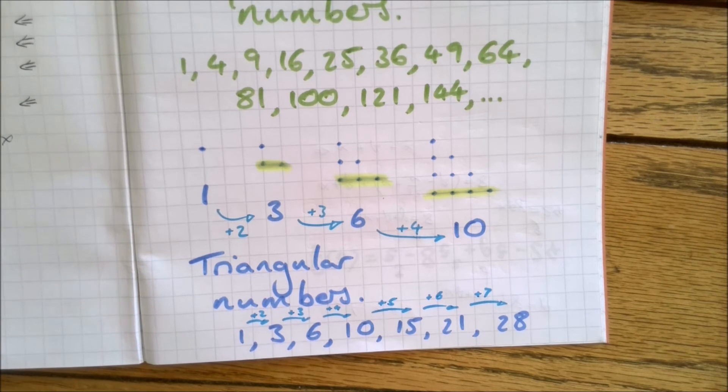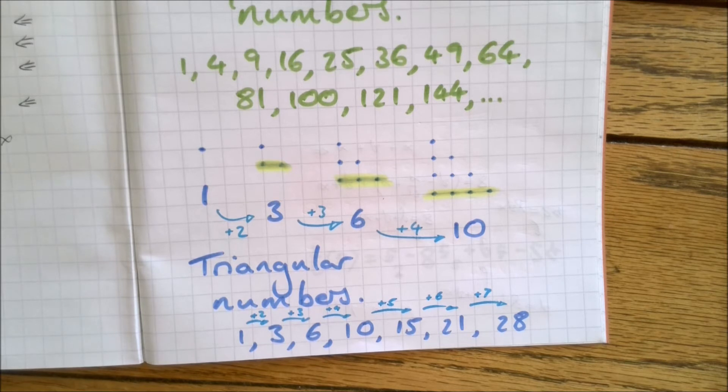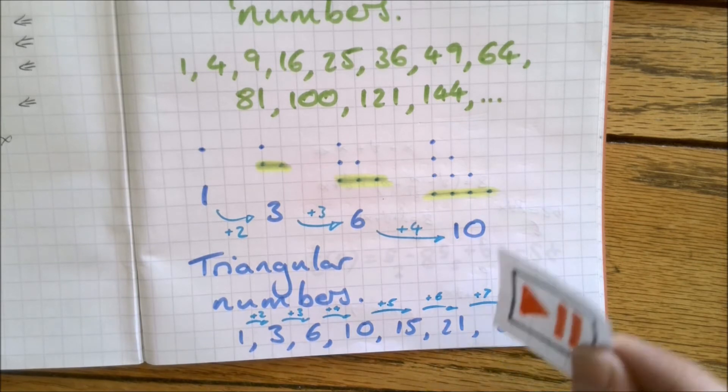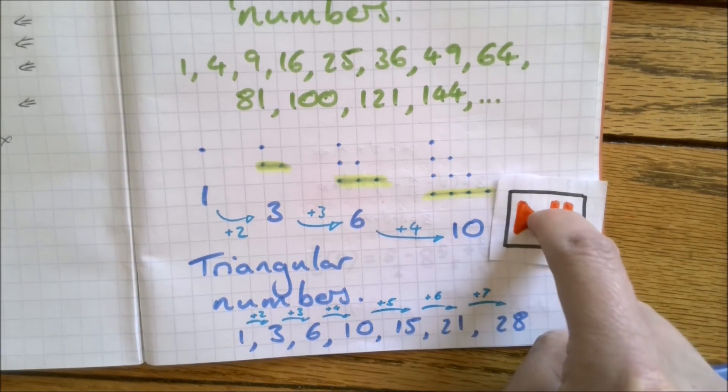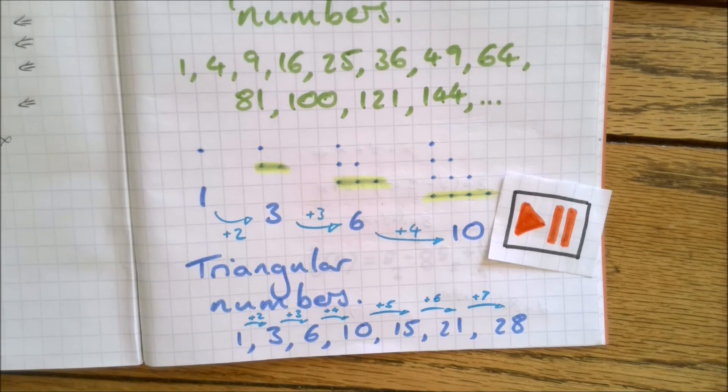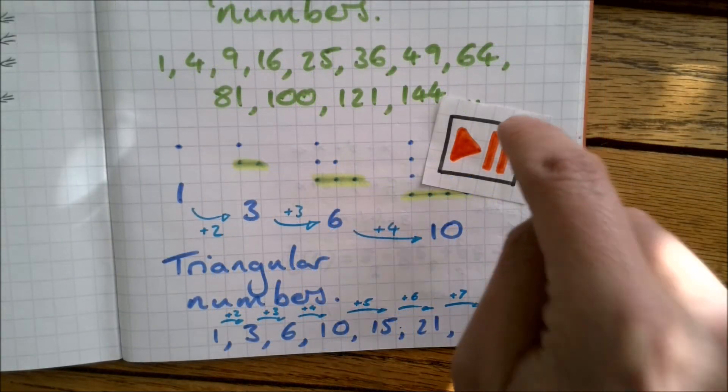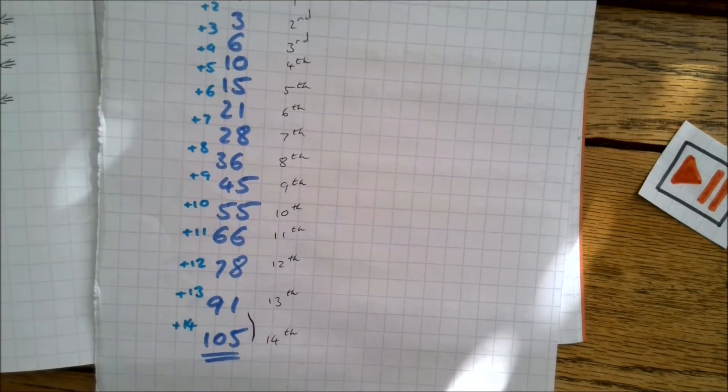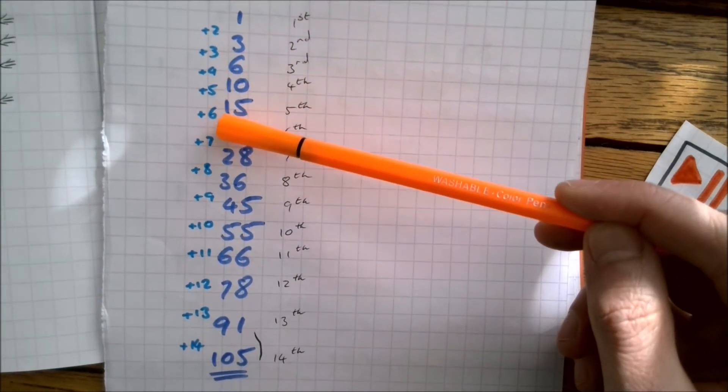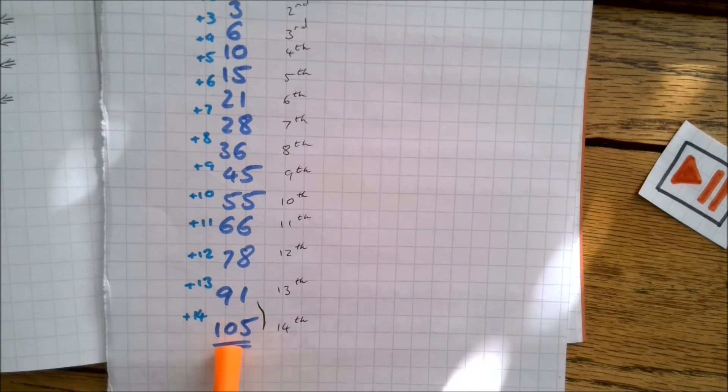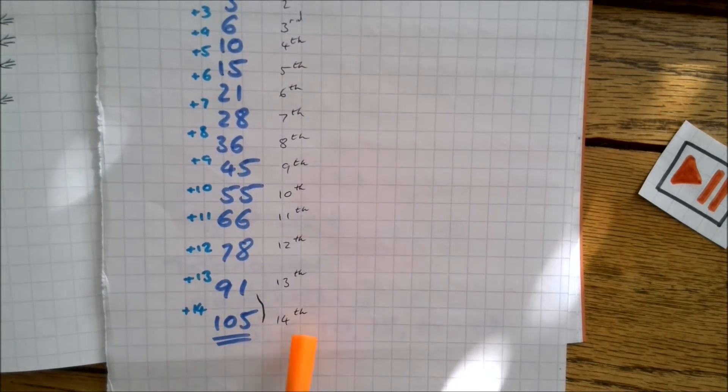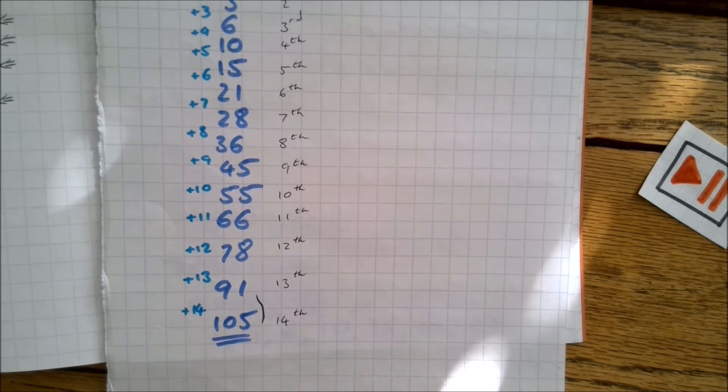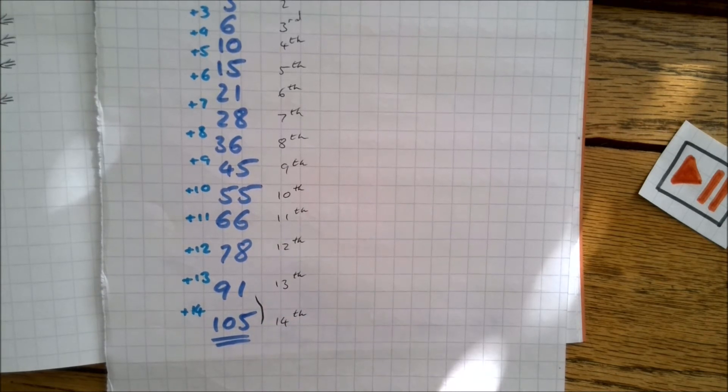What I want you to do is pause the video again, carry on that pattern and tell me the first triangular number that goes over a hundred. Give it a go. Hopefully you've had a good go at that. I have myself. Here's what I did. I carried on with that pattern of adding that we spoke about until I got to over 100. And I got 105 was the 14th triangular number. That was the first one over 100. Well done if you got the same.